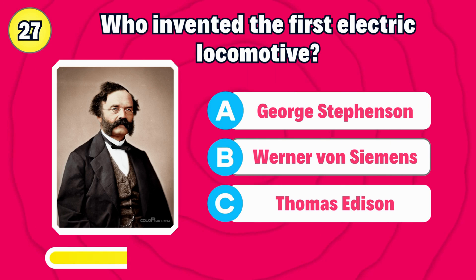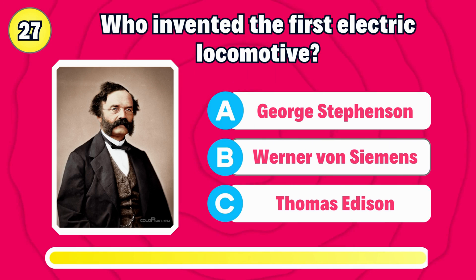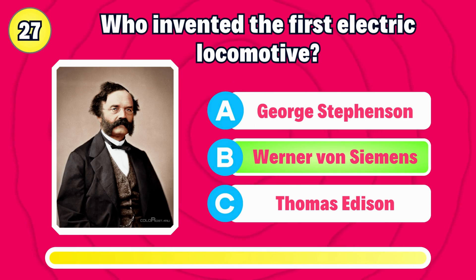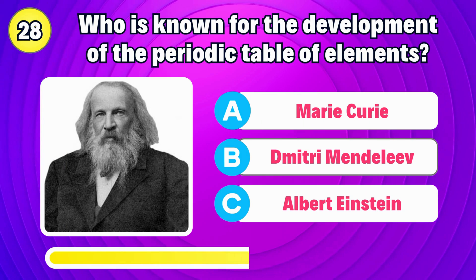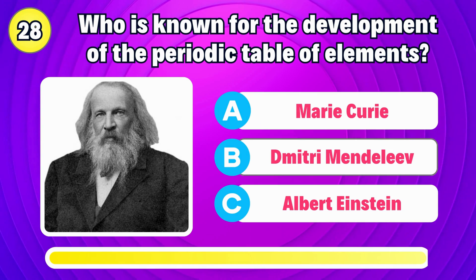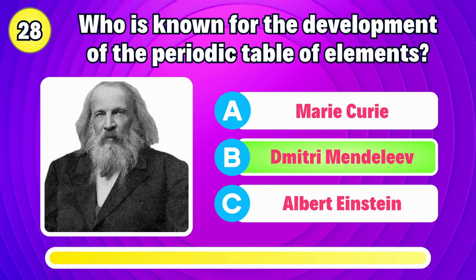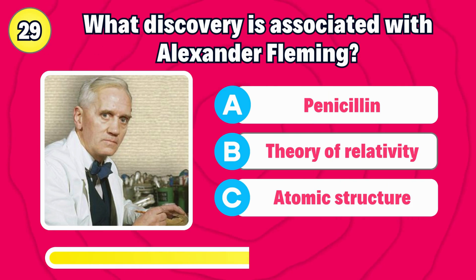Who invented the first electric locomotive? Right, it's Werner von Siemens. Who developed the periodic table of elements? That's correct, it's Dmitry Mendeleev.